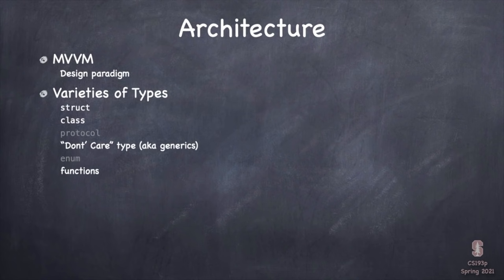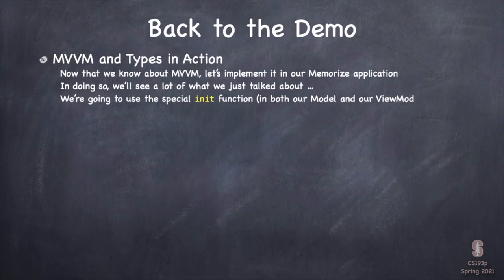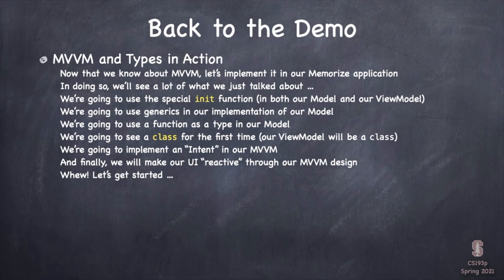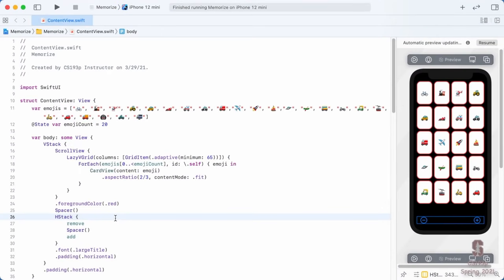That is all the architecture chatting I wanted to do. We understand now what MVVM is and we know about some of the most important kinds of types in Swift. So now we can jump back into our demo and use it all. Most importantly, we're going to apply MVVM to our card game and give it some logic so we can actually play the game. Our goal for this week is to get our app to actually play the game of Memorize by applying this MVVM thing we just talked about.